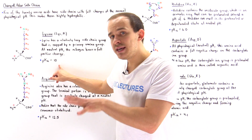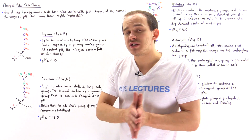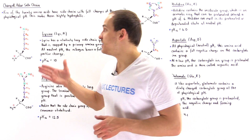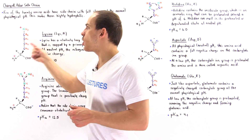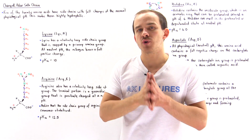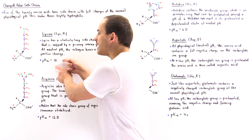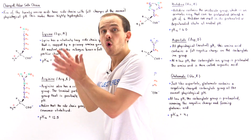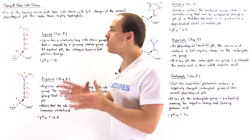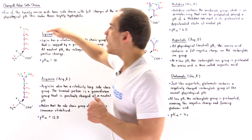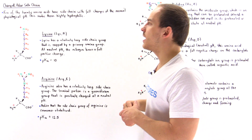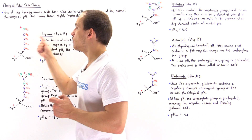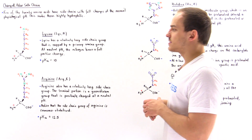The pKa means that if the pH equals the pKa, half of the molecules are deprotonated and half are protonated. Since we're below the pKa of 10 at the physiological pH of 7, all of these lysine amino acids will be protonated and will have a full positive charge on the nitrogen. That's exactly what makes lysine a basic amino acid.